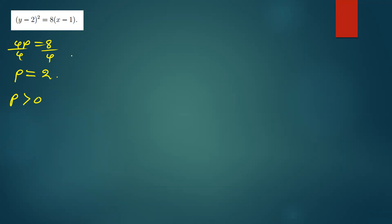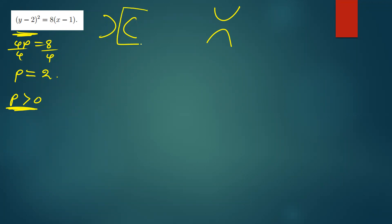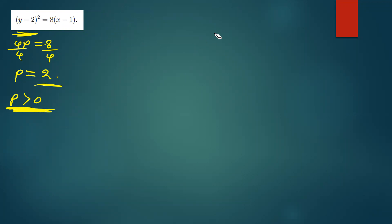When y is squared, the parabola faces left or right; when x is squared, it faces up or downward. Since p is positive and y is the variable that is squared, we expect the curve to face towards the positive x-axis — it opens to the right. After establishing this, the next step is to find the vertex.